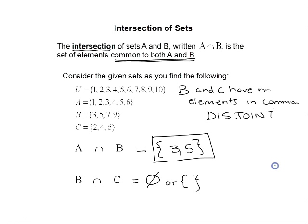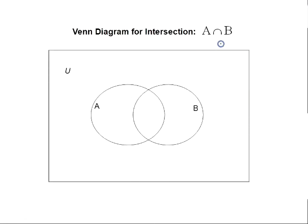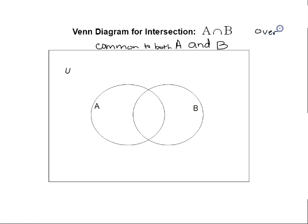Let's look at the Venn diagram for the intersection of sets. The Venn diagram for A intersect B shows the elements common to both sets. If you think about the intersection of two streets, the intersection is the overlap of the two streets. The intersection A intersect B is the overlap of the two circles — what's common to sets A and B.